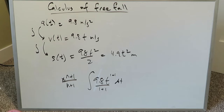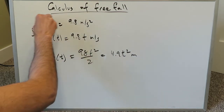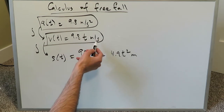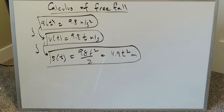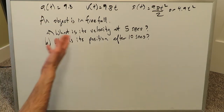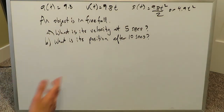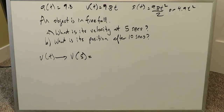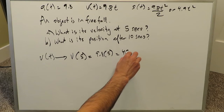In basically one or two minutes we've come up with three functions you will see in kinematics: the acceleration of an object in free fall, which is 9.8 meters per second squared; the velocity function, 9.8 t meters per second; and the position function, 4.9 t squared meters. Now let's apply this knowledge. Given the velocity function, if an object is in free fall, what is its velocity at five seconds? You look at v(t) = 9.8 × 5, and you easily get 49 meters per second.